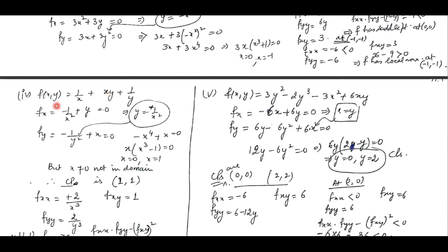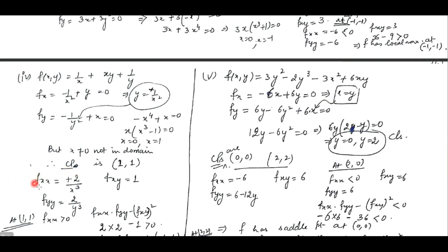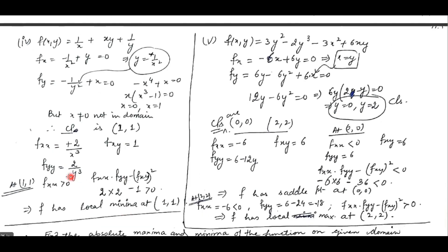For the fourth part, we find the critical points for that function. Here we are having a function with 1/x and 1/y, so clearly x ≠ 0 and y ≠ 0 in the domain. When you find out the partial derivatives and simplify the two equations, you get 0 and 1 as candidate critical points for x. But since x cannot be 0 as that is not part of the domain, the only critical point is (1, 1). At (1, 1), the second order derivative with respect to x, x is positive and the discriminant is also positive, so the function has local minima at (1, 1).